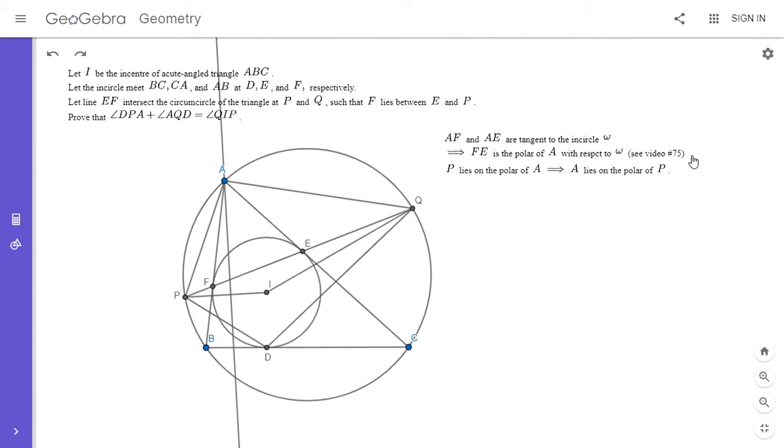So I'm dropping a perpendicular from A to PI, and I'm going to label three of the intersection points. So I'm going to label G the intersection with EF, H the intersection with IP, and J the intersection with the circumcircle. So G we labeled the intersection of this line with EF. So G then also has to lie on the polar of P. And so we can take advantage of that fact.